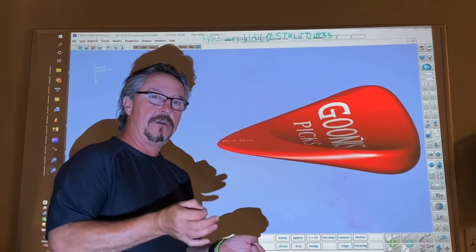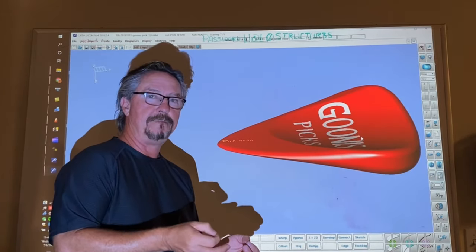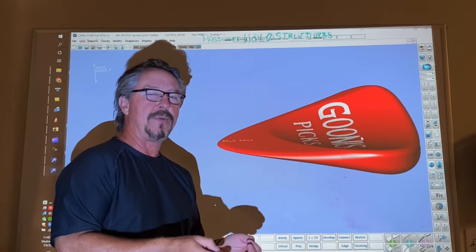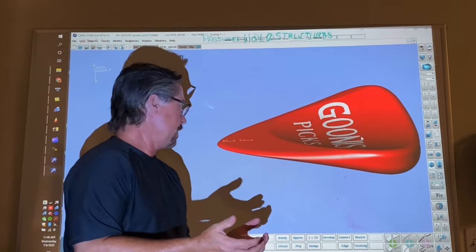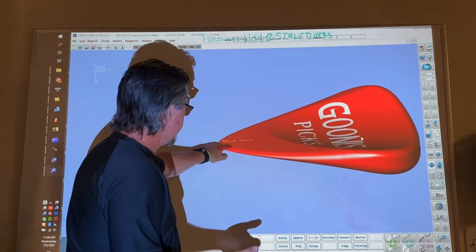A lot of the picks that have that bevel shape have a sharp edge right here. That sharp edge can make the strings pop off of it in a non-conformed way. So we soften this edge.